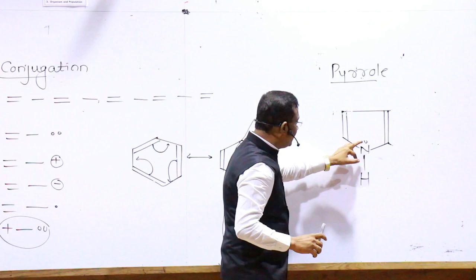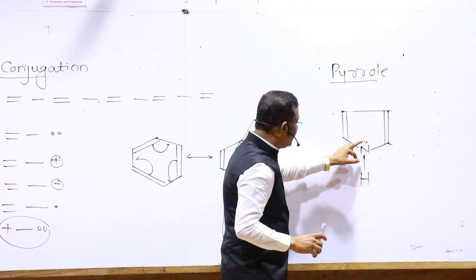How are you saying double, single, lone pair. Double, single, lone pair. Two sides double, single, double. But I don't.